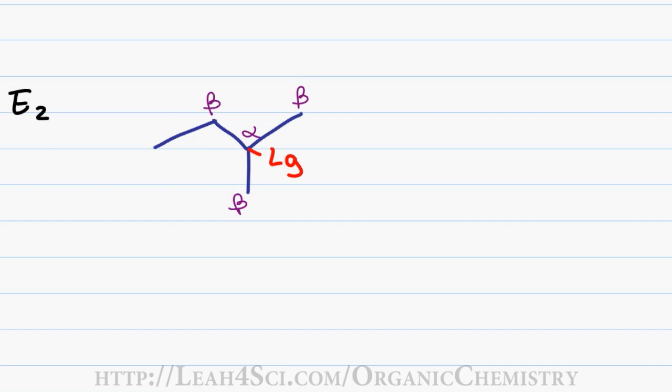Therefore, despite the fact that the leaving group is tertiary, which implies we can have a carbocation, we have plenty of beta hydrogens available, so given proper conditions we can have an E2 reaction. That means we can have primary, secondary, or tertiary leaving groups experiencing an E2 reaction.